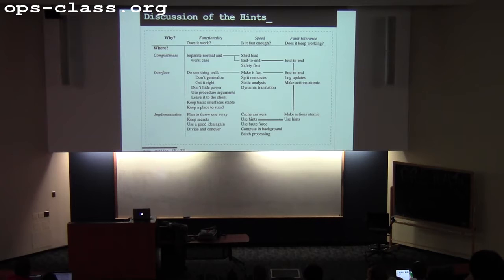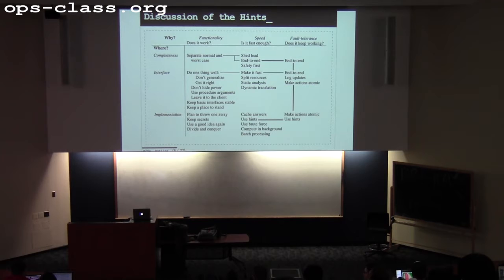There were also three things we were interested in: functionality — does it accomplish what we want? Speed — does it perform well? And fault tolerance — does it keep working? So, keeping basic interfaces stable — what does that mean? One suggestion: if a particular function of an interface has fewer dependencies, make sure you're not changing it very often.